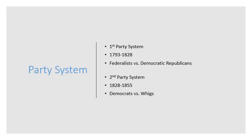Let's have a quick review. The party system is not mentioned in the Constitution — it rises organically as people with different ideas organize into parties. The first party system is really between 1793 and 1828, the Federalists versus the Democratic-Republicans. The second party system is from 1828 to 1855, the Democrats versus the Whigs. The party system continues to have a huge influence and these things continue to be seen in politics today.